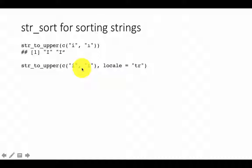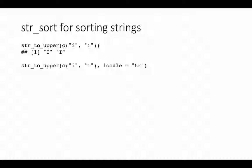The way str_to_upper and many string functions work is they have an argument called locale. These string operations can be performed on characters from any language. Computer programming began with just English characters but has since expanded to cover all major world languages — several hundred languages are covered. So many of these operations have to be performed across all of those languages.